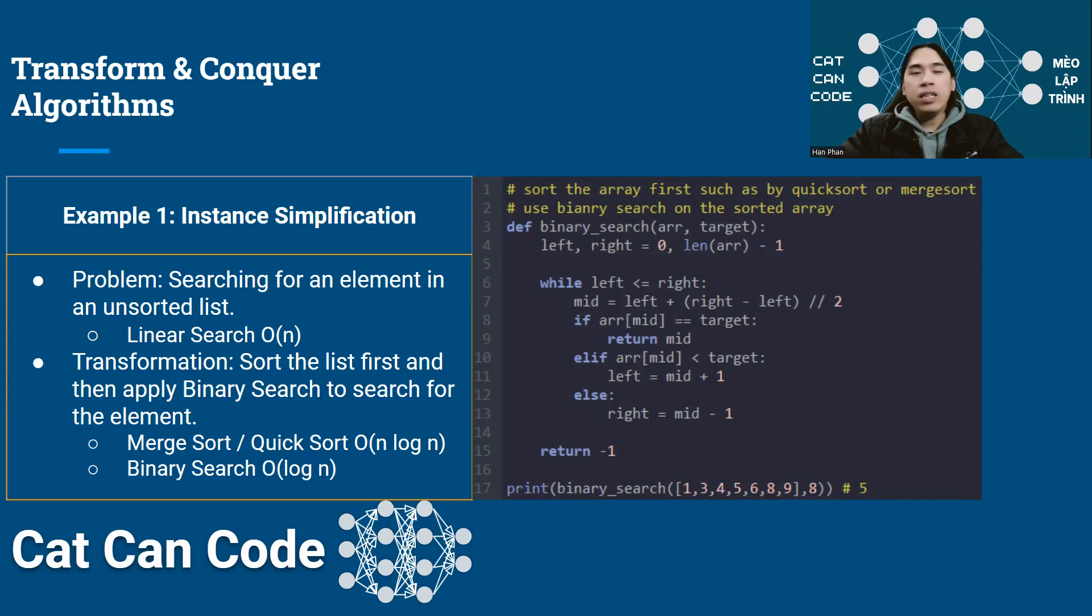The problem we have here is searching for an element in an unsorted list. The obvious approach that people may think is to do linear search. You will look through all the elements in your unsorted list and find the matching element. Obviously, the complexity of this approach is O(N). However, if you perform this search over and over again, this O(N) will be costly. So how can we improve this further? Let's try to use Transform and Conquer approach.